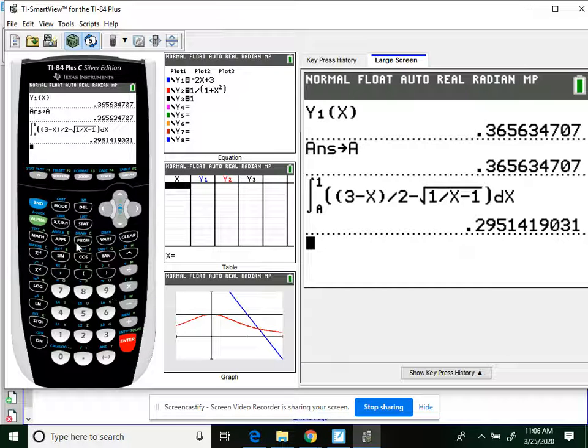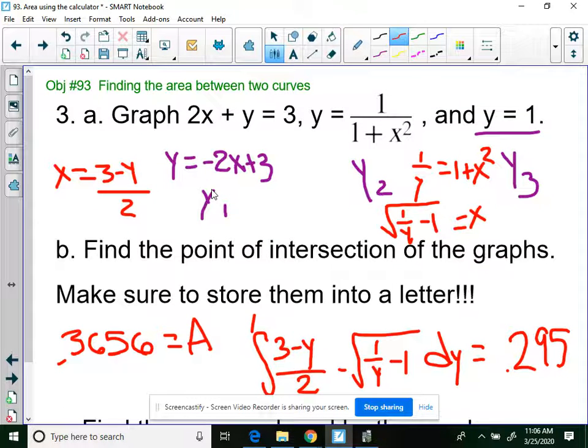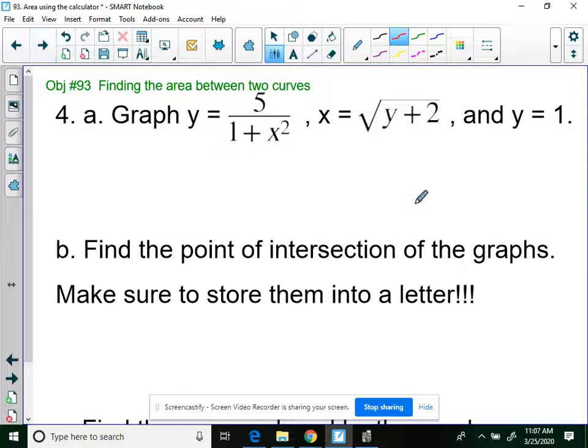0.295. So this really isn't hard. It's time consuming. Because you're setting things equal, you're making a window, you're finding where stuff intersects. It's not overly hard, I would say, at all.